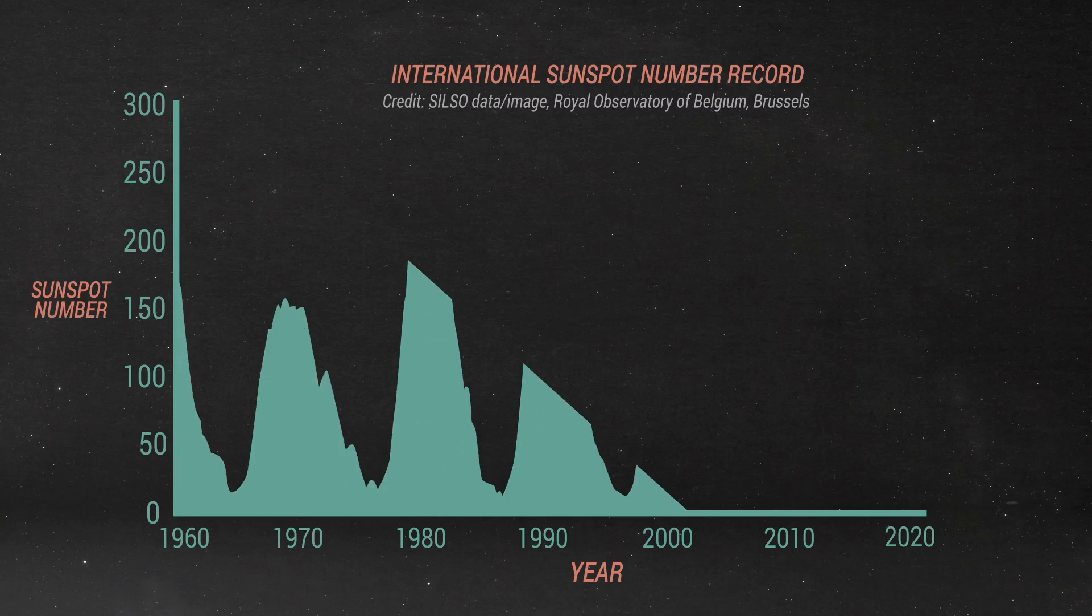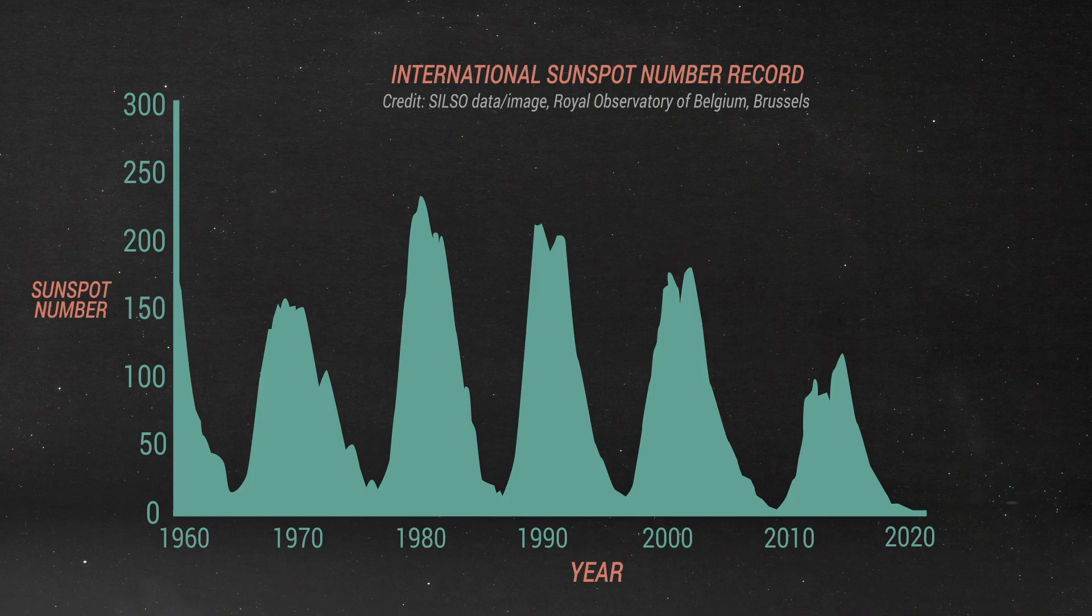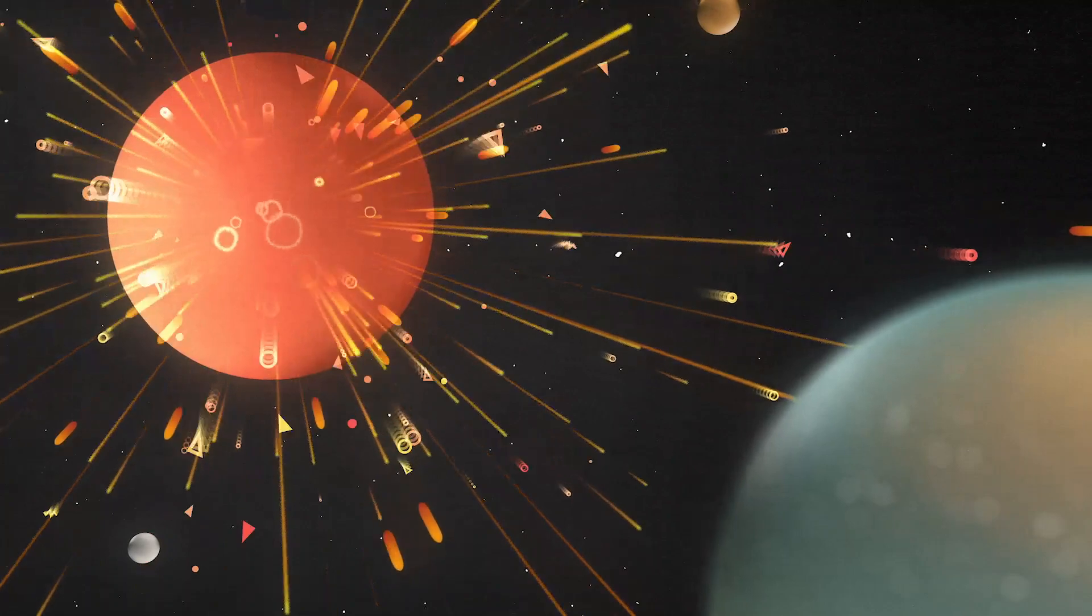Solar maximum, the period of highest activity, can vary wildly from cycle to cycle. The more sunspots there are, the higher the frequency of solar storms of all types.